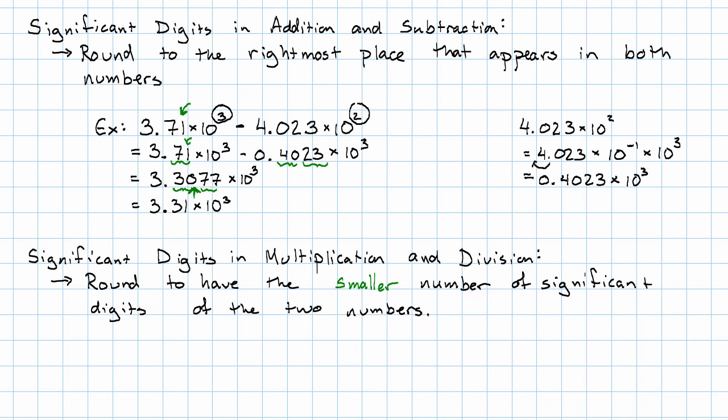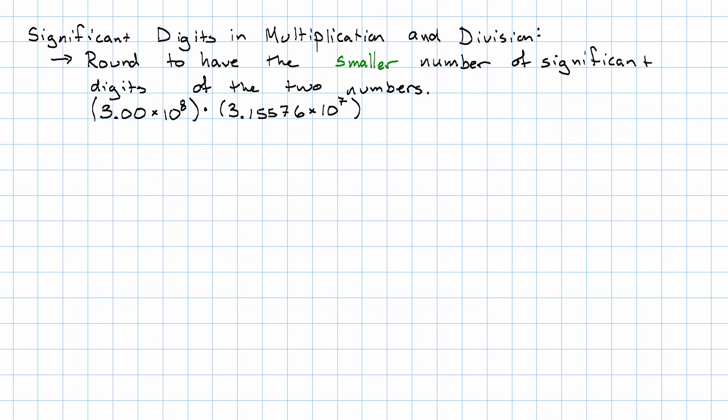What really matters when we're thinking about the precision is just how many significant digits we actually have. So we're going to round to have the smaller number of significant digits of the two numbers. Again, let's see an example.